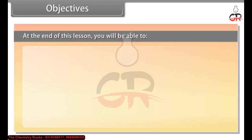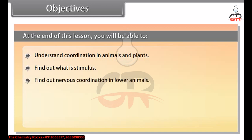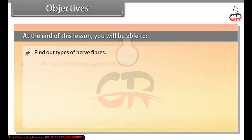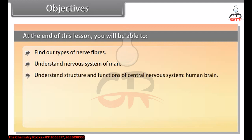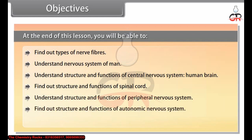At the end of this lesson, you'll be able to: understand coordination in animals and plants; find out what is stimulus; find out nervous coordination in lower animals; understand nervous coordination in higher animals; find out the unit of nervous system, the neuron; find out types of neurons; find out types of nerve fibers; understand the nervous system of man; understand structure and functions of the central nervous system and human brain; find out structure and functions of the spinal cord; understand structure and functions of the peripheral nervous system; find out structure and functions of the autonomic nervous system; and understand reflex actions.